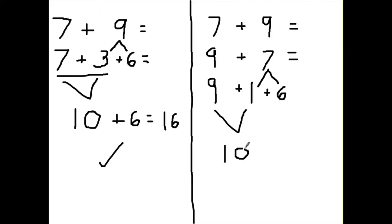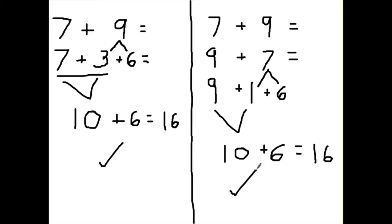What do we have left over? We have the 6 left over. And look — we have the same problem solved here and here, two different ways, and it is the exact same answer: 1 ten and 6 more equals 16. So two different ways to do it. Do the one that works for you. When you see a number you recognize and can make 10 with, use that number. Remember, you can always flip-flop an addition problem to make it easier to work with.